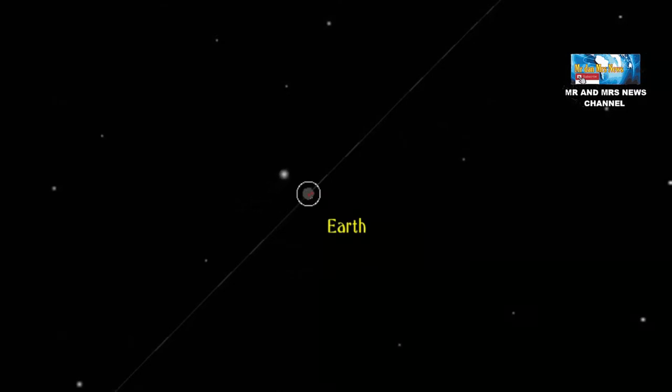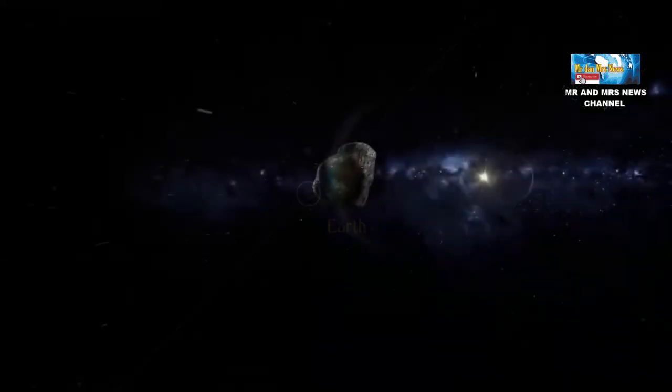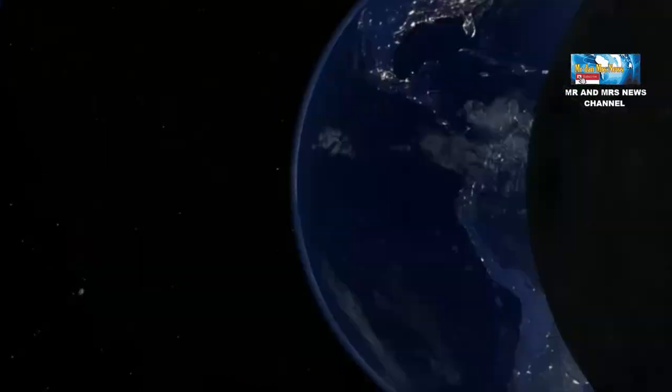Space rock 2001CB21 measures 1.3 kilometers or about 4,265 feet. If we compare it to objects on Earth, this asteroid equals 4 times the width and height of the Eiffel Tower in France.